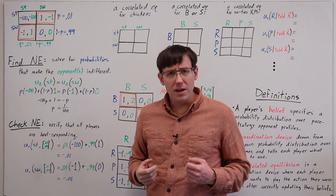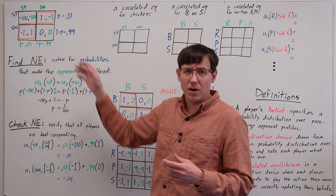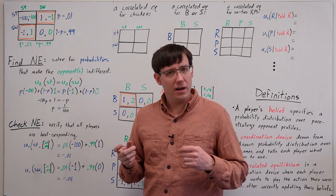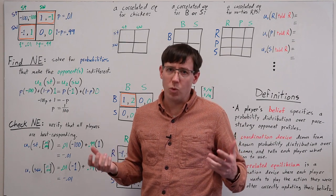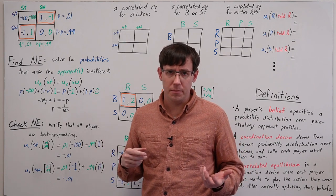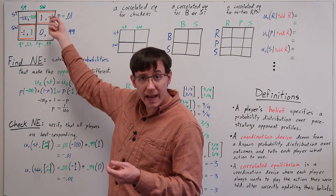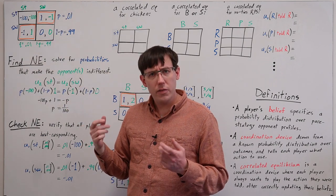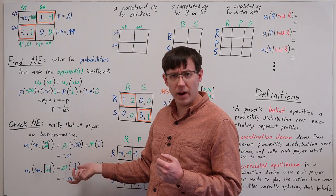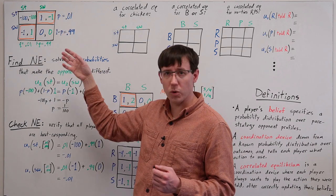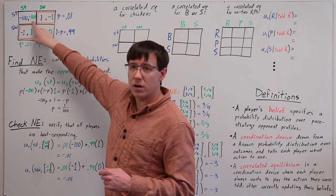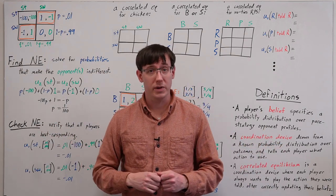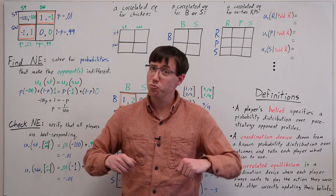All three Nash equilibria of this game are somewhat unsatisfactory. None of them Pareto dominates the others, and each seems bad by at least one of our other social welfare criteria. The pure equilibria are bad on egalitarian grounds because somebody is always getting a bad payoff of minus 1, and the mixed equilibrium is bad on utilitarian grounds because the total utility is lower, being dragged down by the chance of the crash outcome. But it turns out that cars crashing into each other is enough of a problem in modern society that we've developed a pretty ingenious solution.